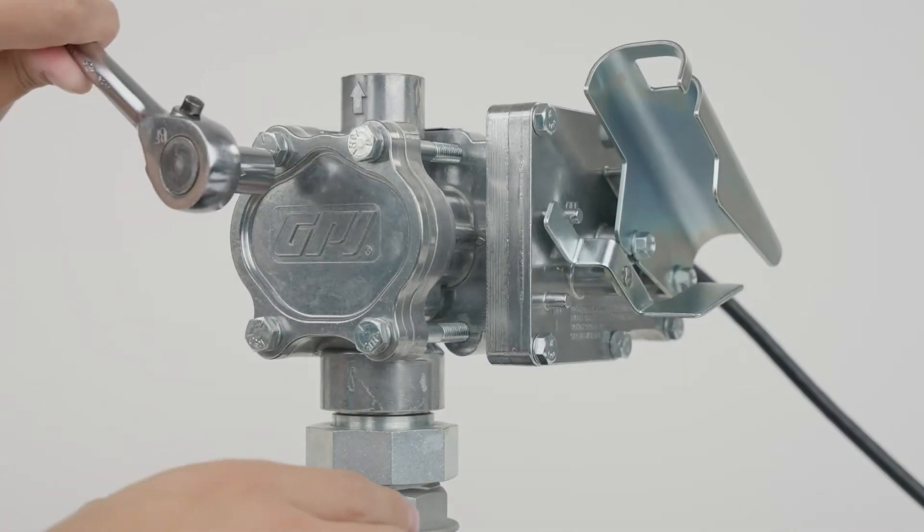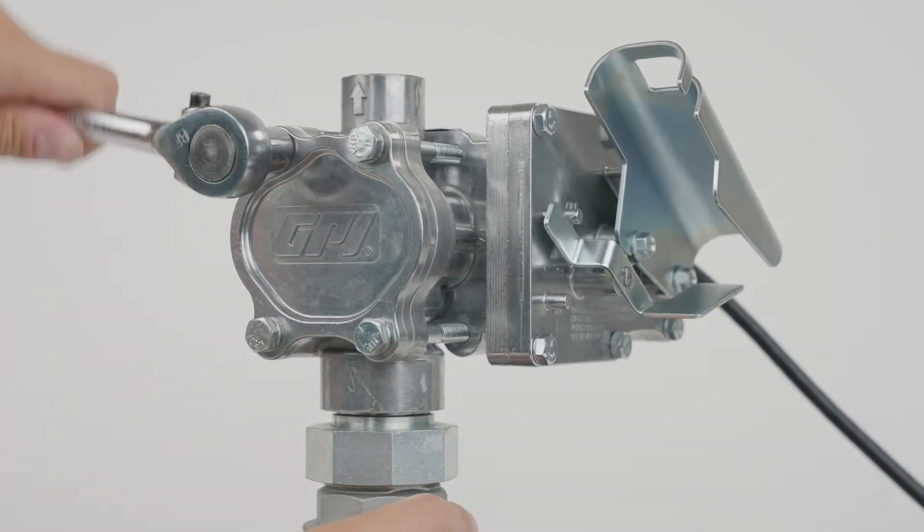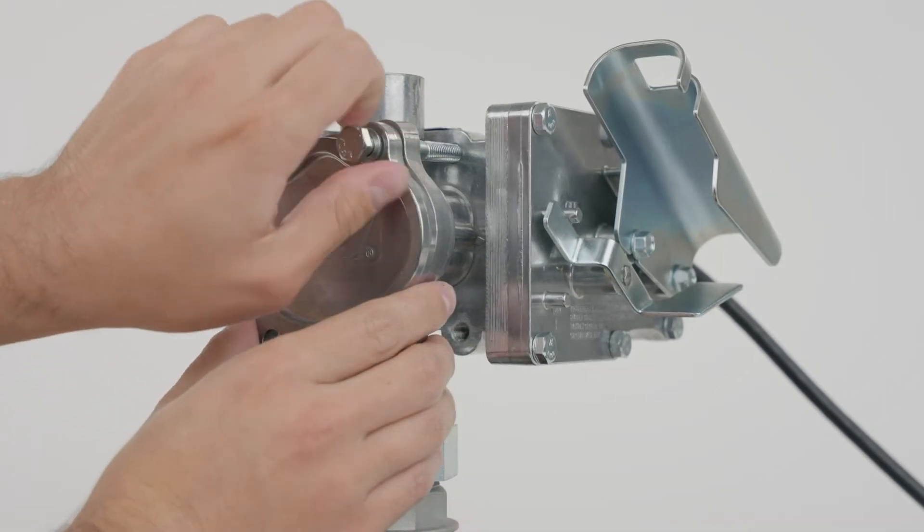Using a 7-16 inch hex wrench, remove the cover plate and gears from the pump cavity.